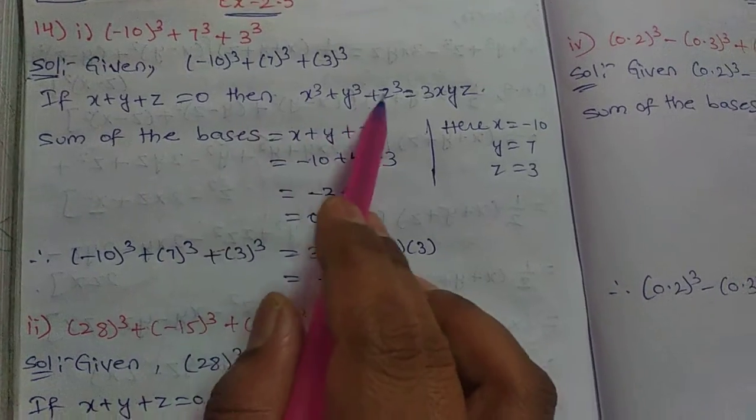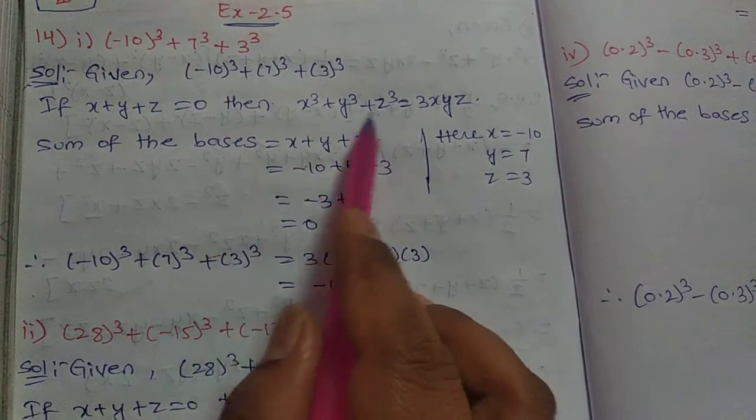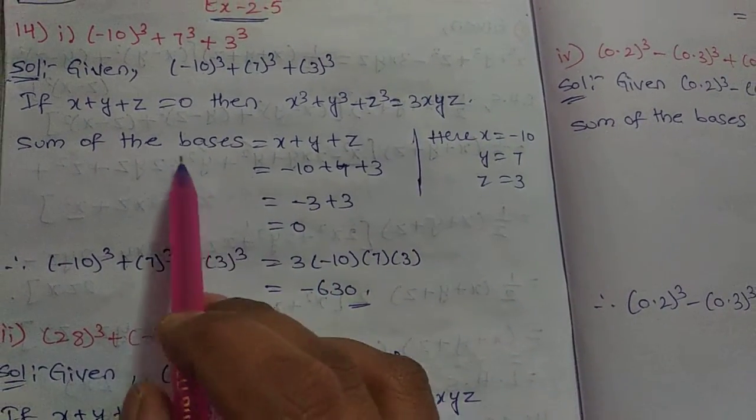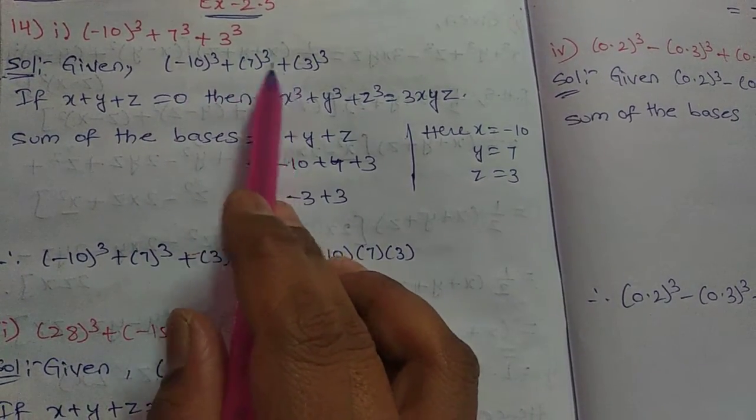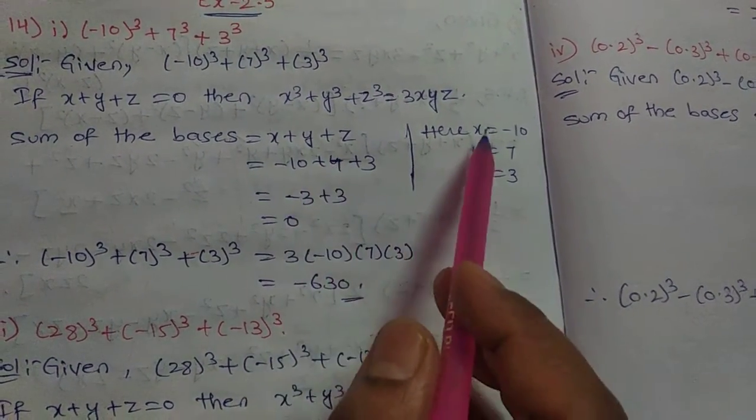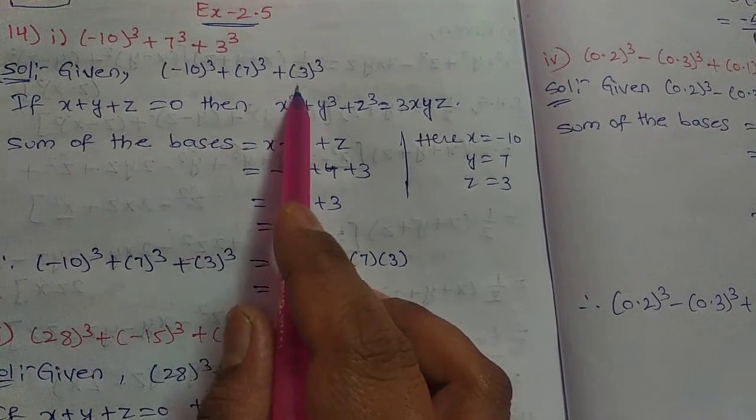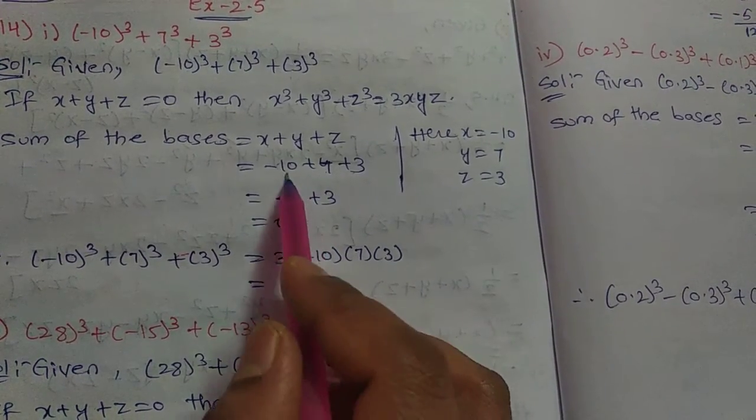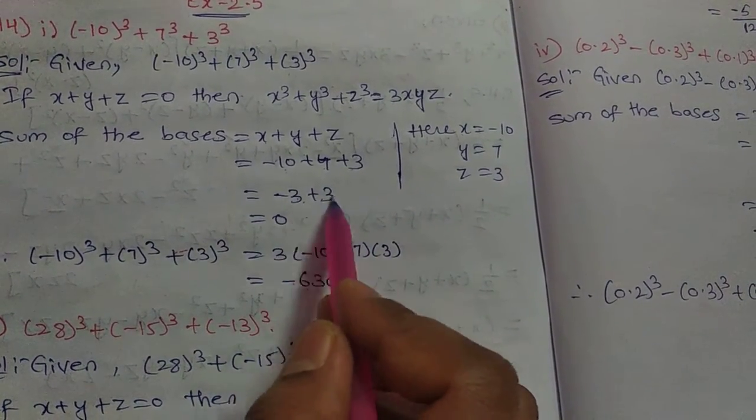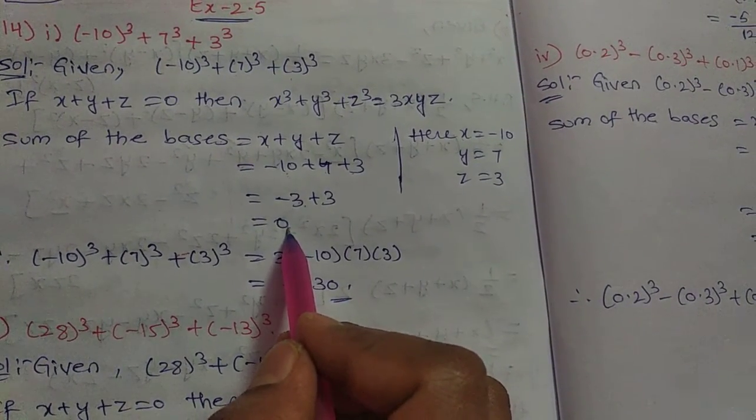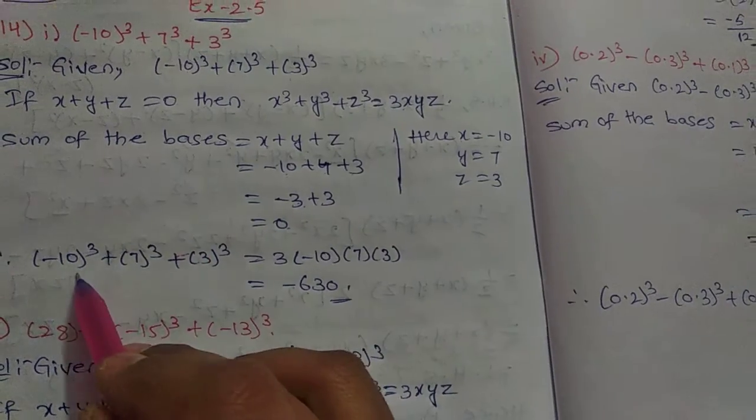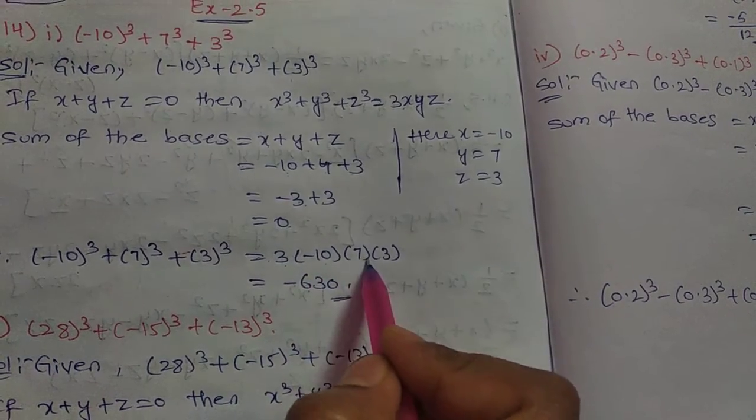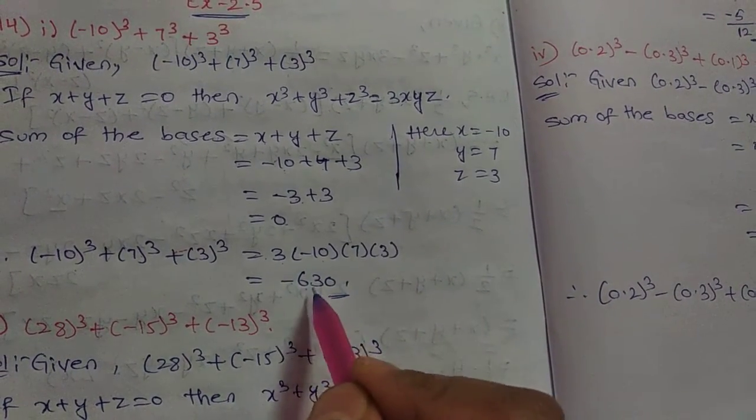So (-10)³ + 7³ + 3³ equals 3xyz. That's 3 × (-10) × 7 × 3. Multiplying these, we get the answer: -630.